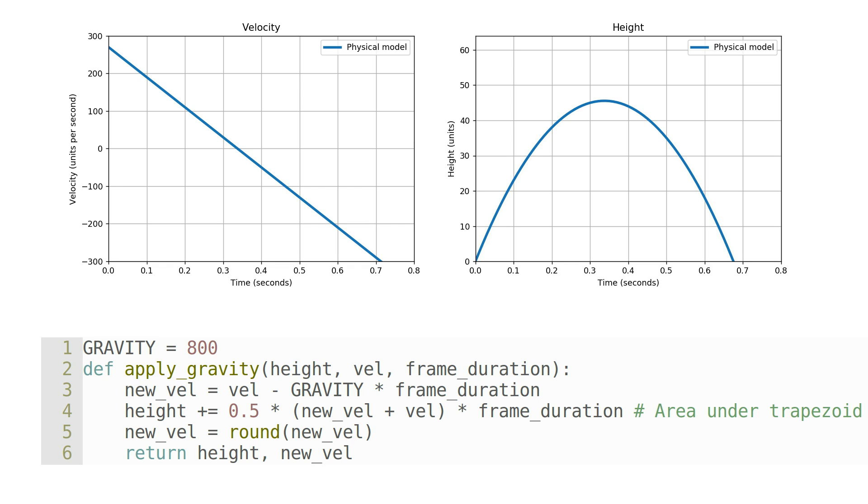The pseudo-code at the bottom of the screen shows how the game does this update when the player is in freefall. The velocity is decreased by the frame duration multiplied by 800, the acceleration due to gravity. The height is then increased by the area under the velocity curve over the time for this step.